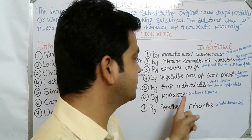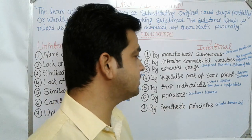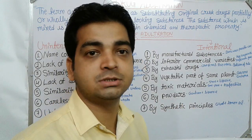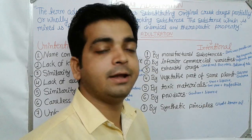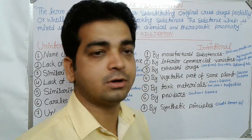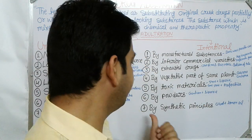The sixth type is adulteration by powders. Different powders are used in powdered drugs. For example, gentian powder can be mixed into licorice powder.